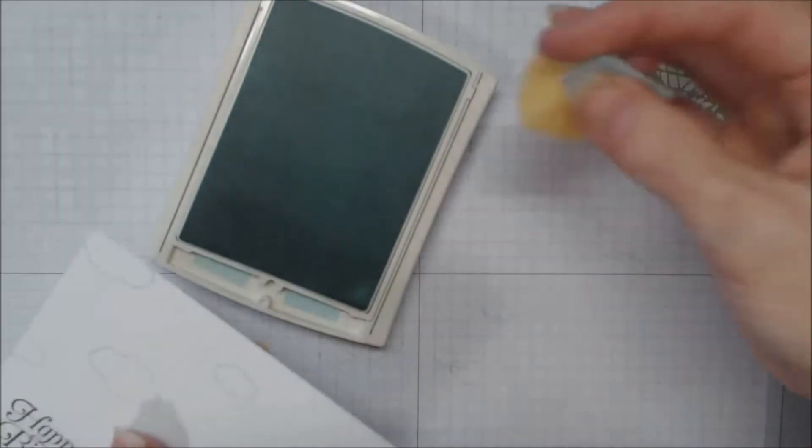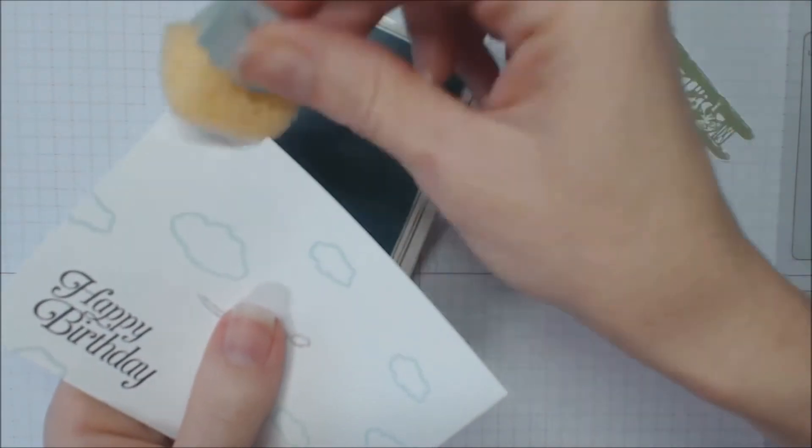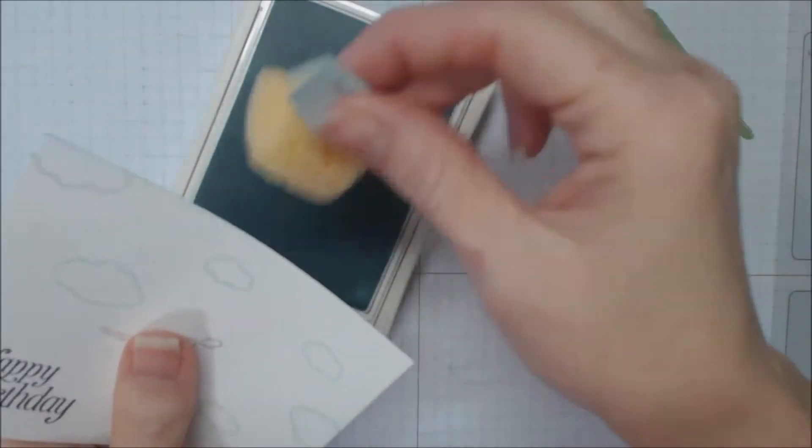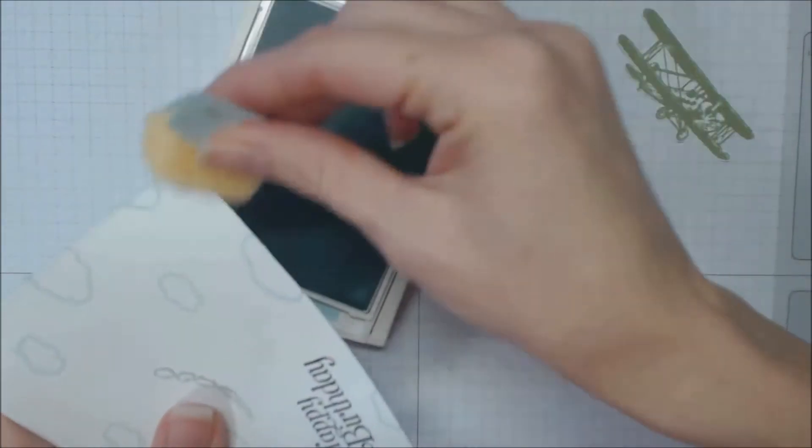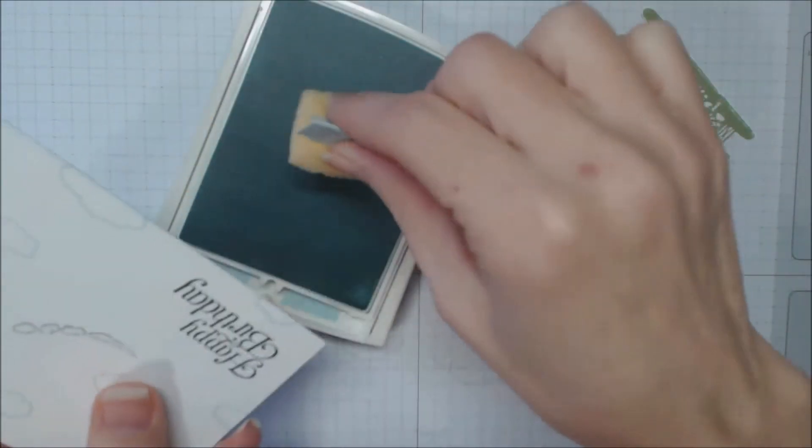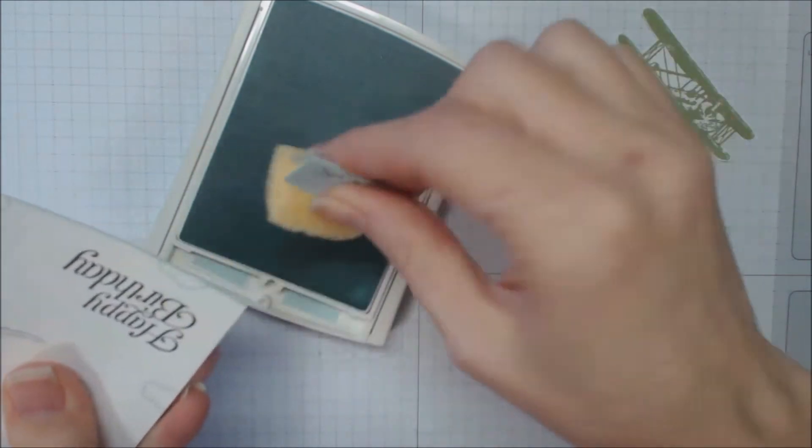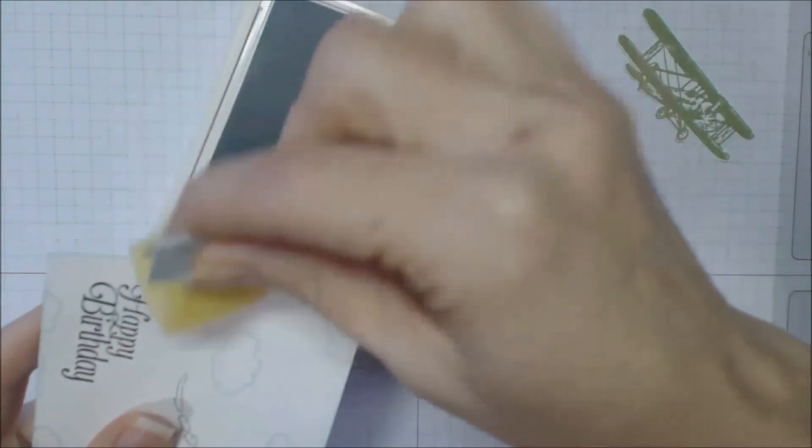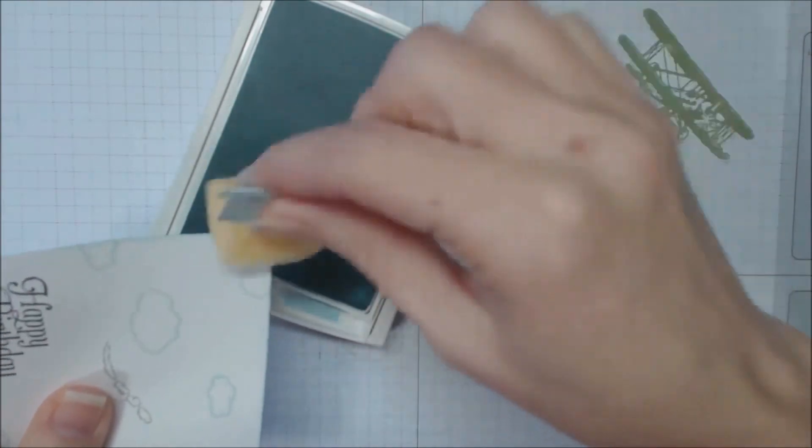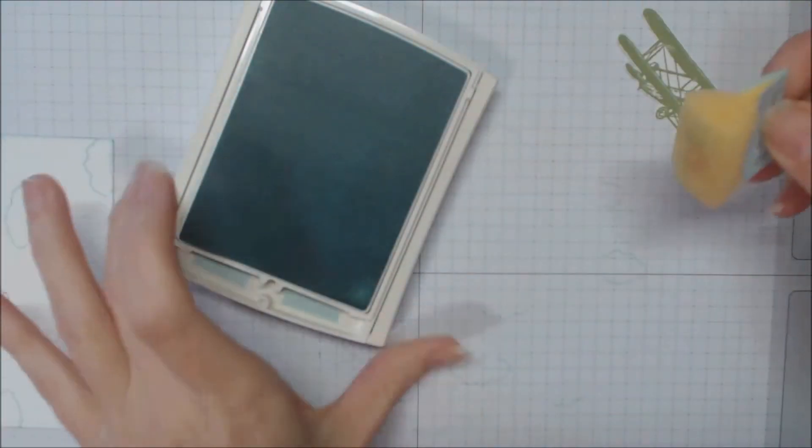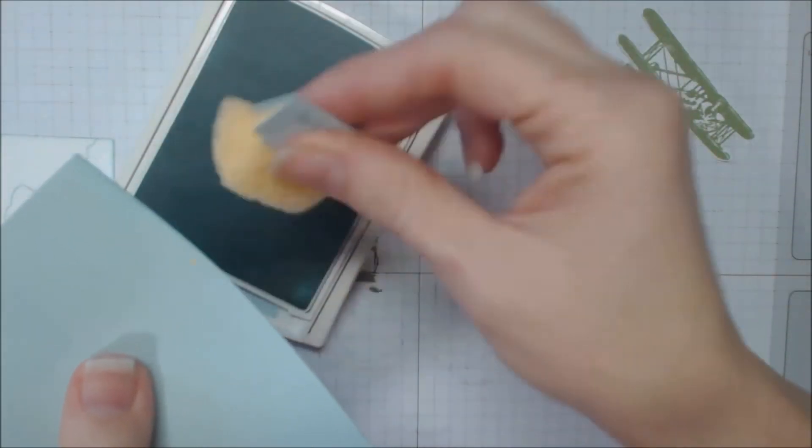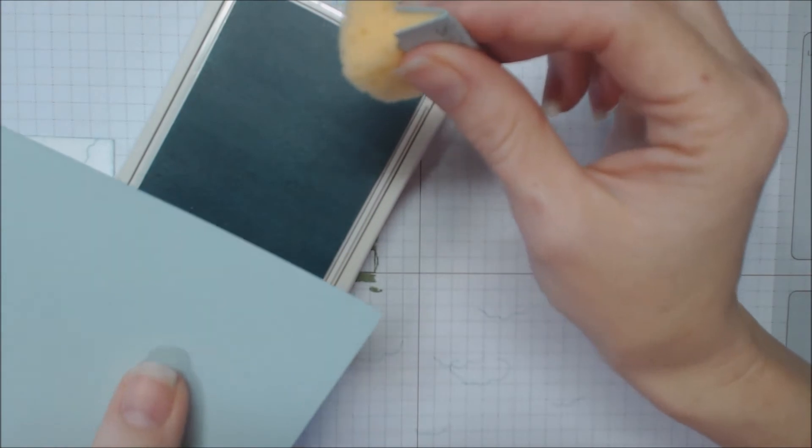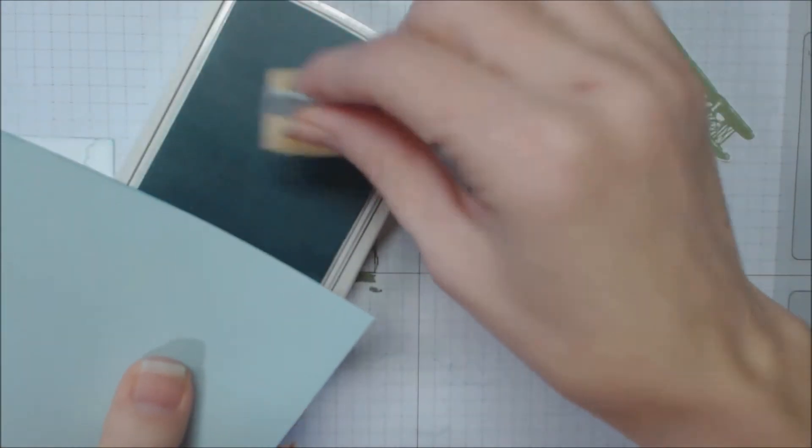I just want to sponge this piece of whisper white for the front of the card with some soft sky ink. So we're going to go around all four edges. I like to create my little sponges here out of a stamping sponge. I cut them into eighths. There's a video that I made not that long ago that shows how I do this. And I'll have a link for that in the description below the video.